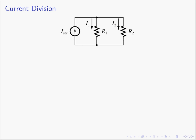Looking at this quickly, we see the current source, R1, and R2 are all in parallel. Since they're in parallel, they all have the same voltage across them, so we'll define that voltage and call it V — V is the voltage across all three of these circuit elements. The source current flows to the right, and when it gets to this node some will go down as I1 and some will go through the other path as I2.